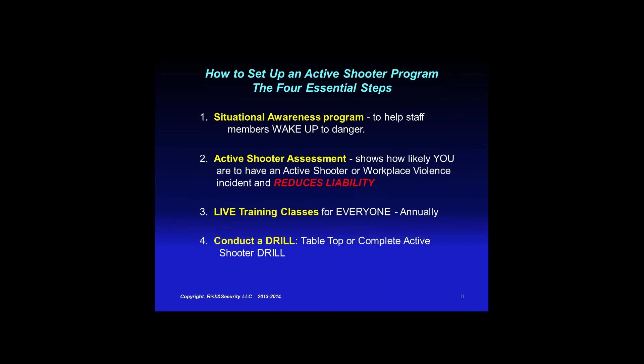After reading all these horrible details, I thought, what program could you set up to prevent this? Being in risk assessment for years, here are the four steps. First is situational awareness — the most important one. It helps people wake up to danger whether they're sitting at their desk or walking to their car at 5 o'clock in the dark. Second is the active shooter assessment. There's no point having training unless you've assessed your risk and made sure your controls are in place, as you'll see with Umpqua.